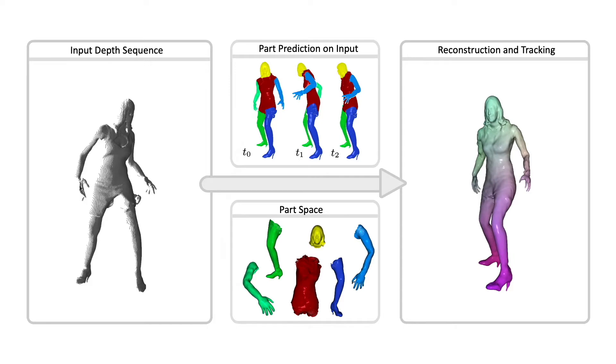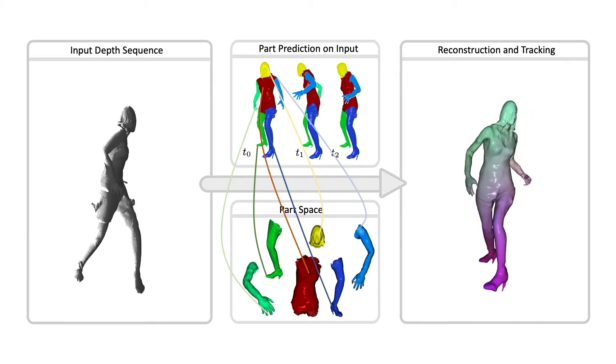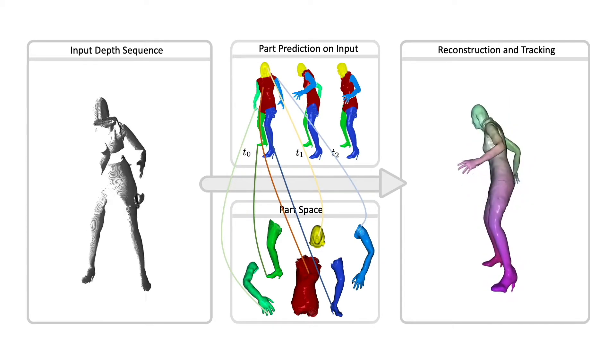Our approach enables a structured characterization of object movement, with part decomposition characterizing a lower-dimensional space in which we can establish coarse motion correspondence. This allows us to effectively fit our part decompositions to new depth sequences with challenging motions.